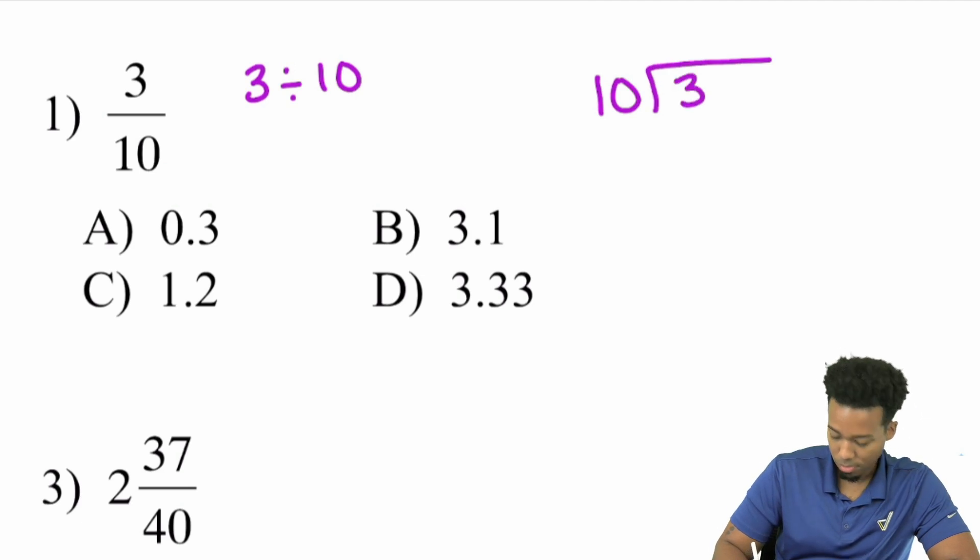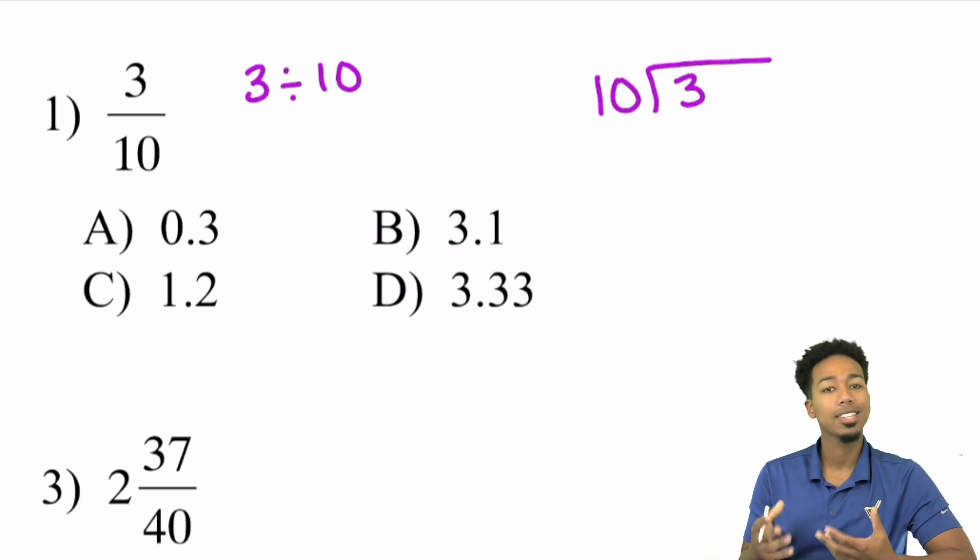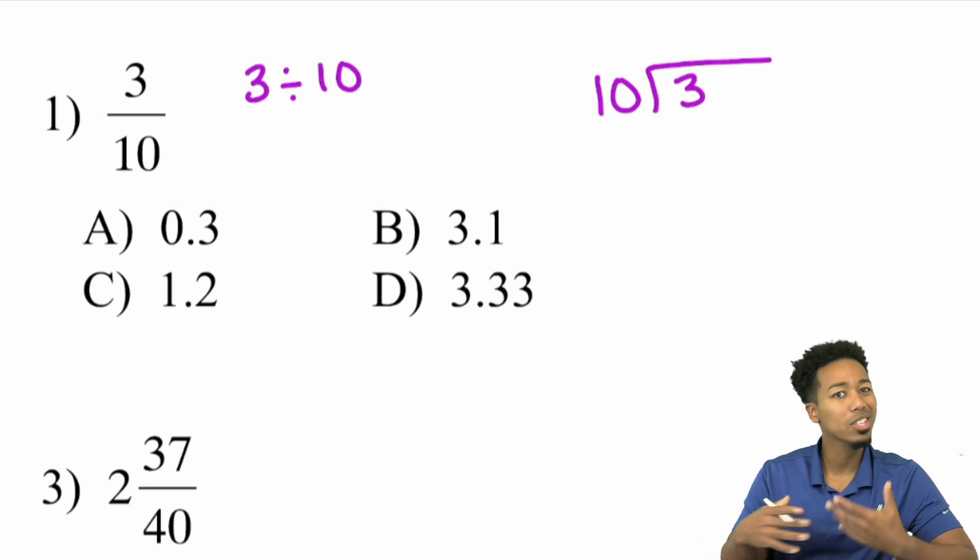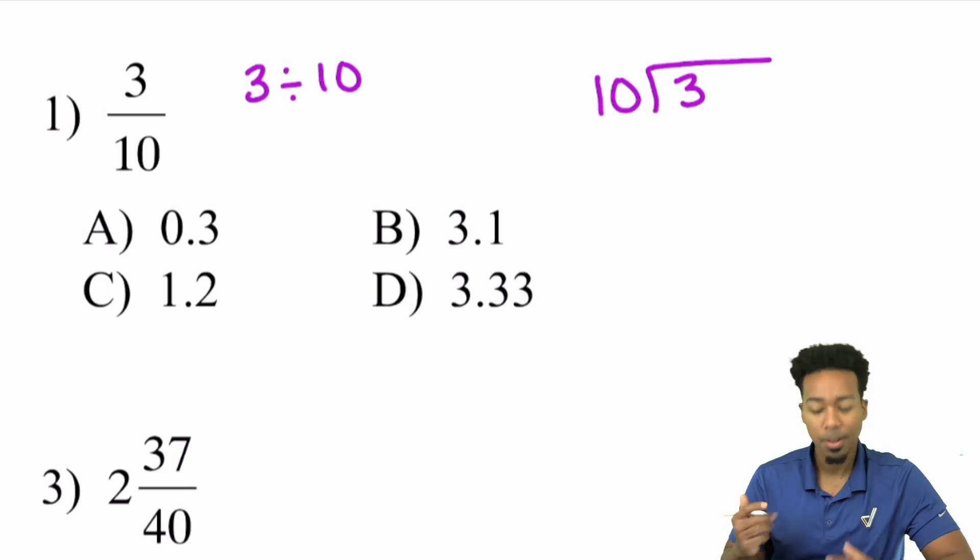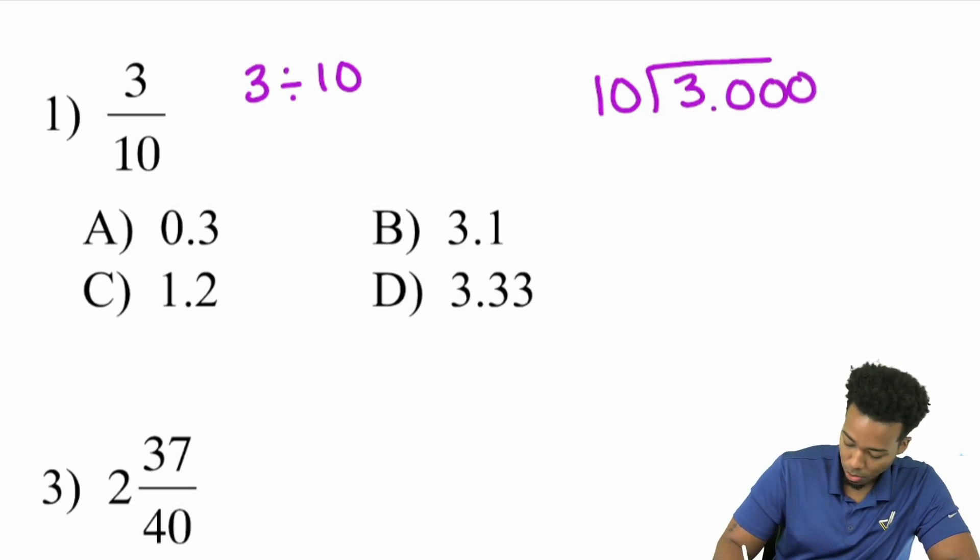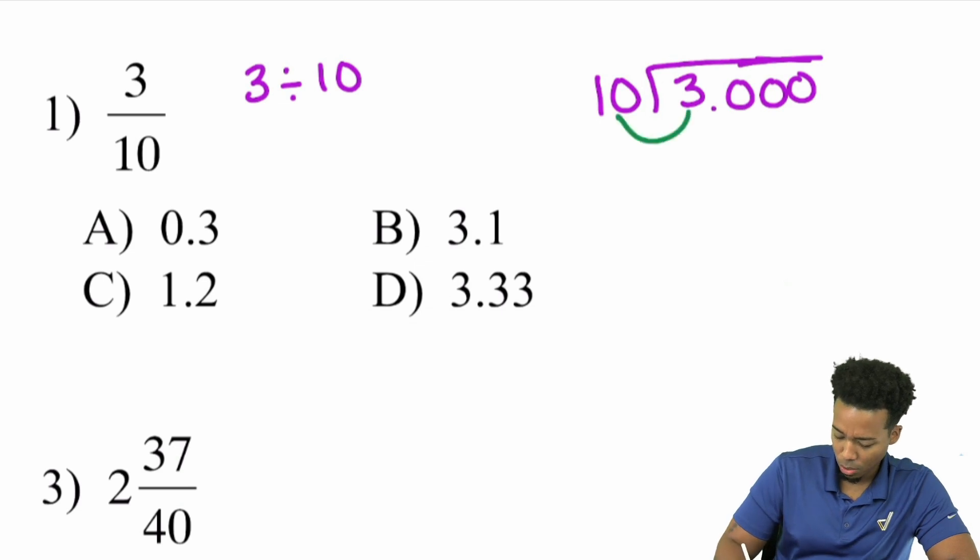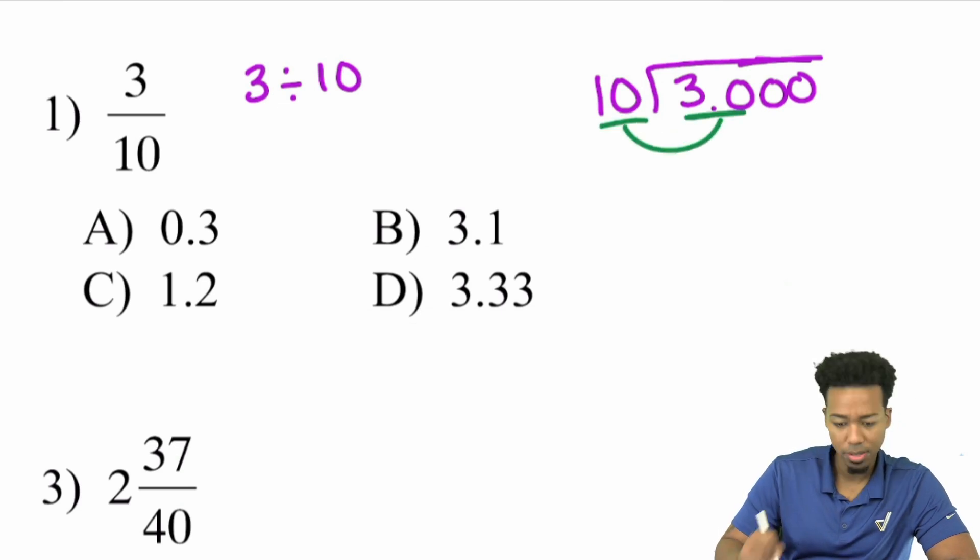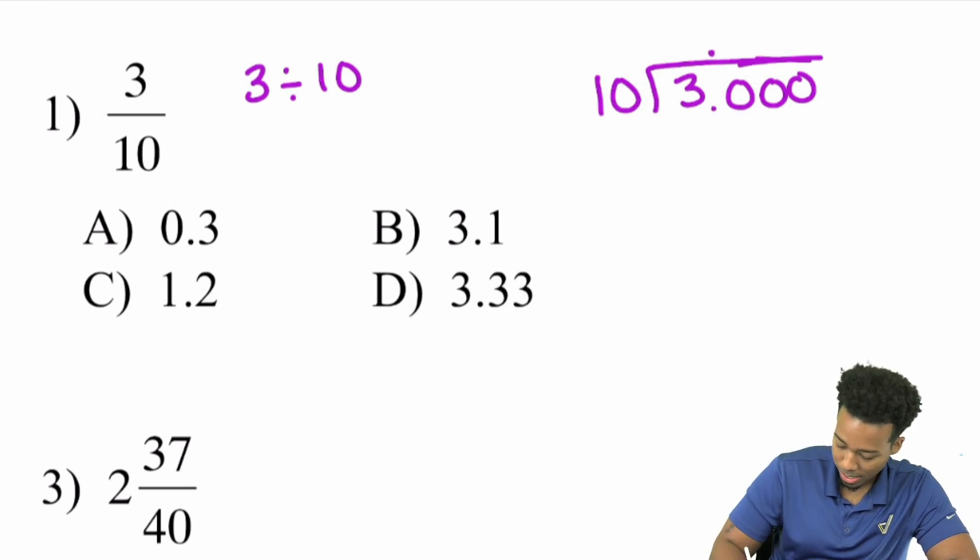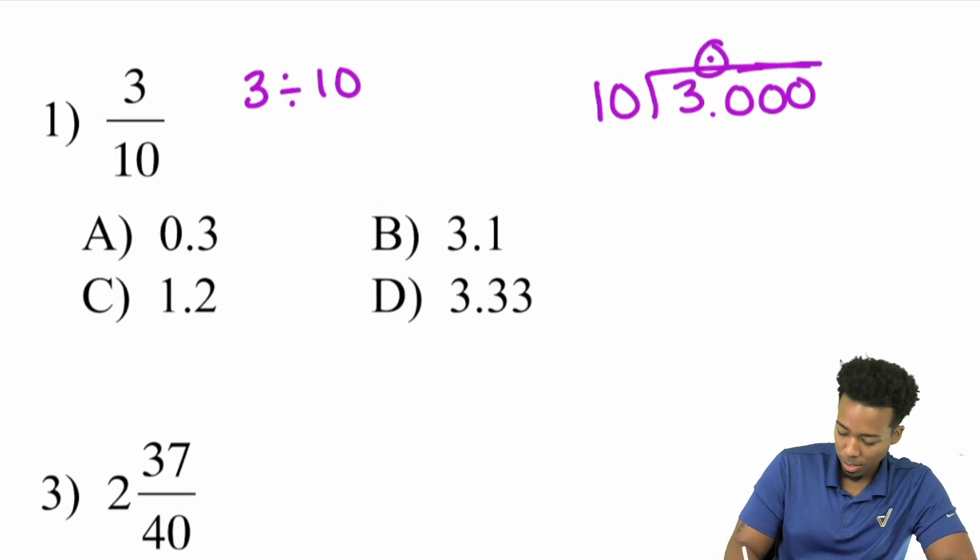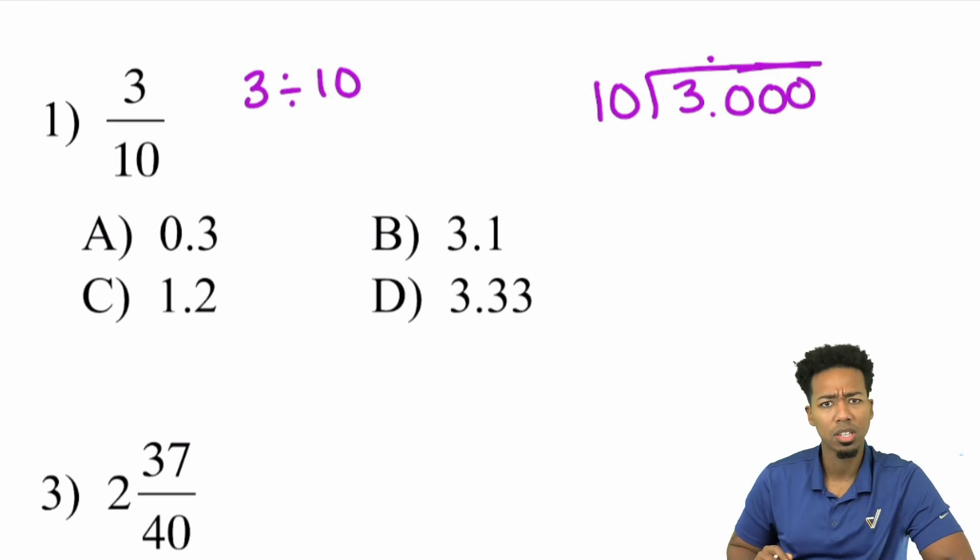To turn a fraction into a decimal, remember a fraction is division. So you're saying this is the same thing as saying three divided by 10. So what you'll do is this. 10 goes into three. That's exactly it. Basically, what you're doing is you're performing division. And so notice that 10 cannot go into three. And that's where the decimal comes into play. That's where the decimal we can go ahead and write a bunch of zeros if we need to.